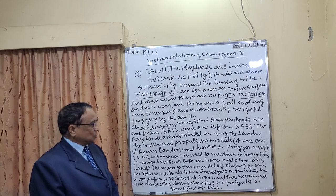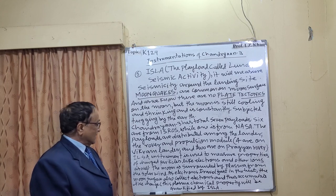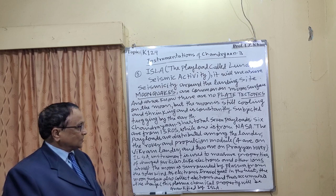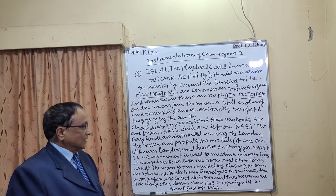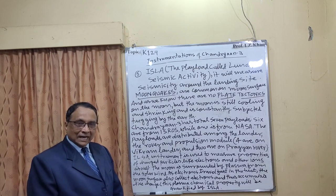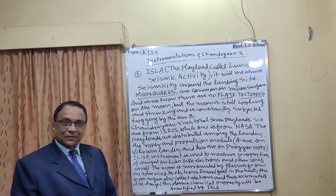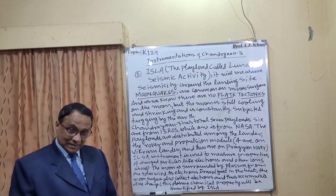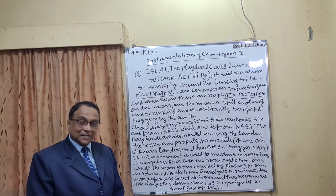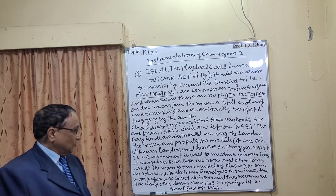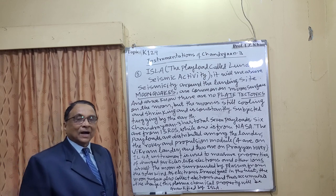The ILSA instrument is used to measure properties of charged particles like electrons and other ions. The moon is surrounded by plasma from the solar wind. As electrons are stable and fast in heat, the moon's surface also collects a lot of electrons, accumulating negative charge. The moon surface collects electrons from the solar wind, which is rich in electrons, and that's why the density of electrons — measured by ILSA — is high. This accumulated negative charge and plasma chemical properties will be quantified by the ILSA instrument.